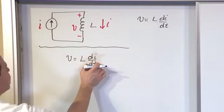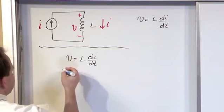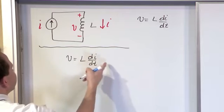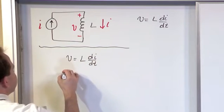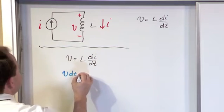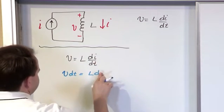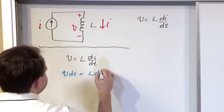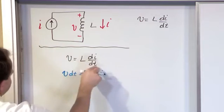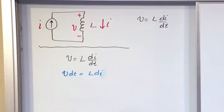So what we're first going to do is move this dt to the other side. So this is almost like a fraction. You can multiply both sides by dt. So what you'll get is V times dt is equal to L times di. So the only thing that we've done is multiply by dt on both sides.